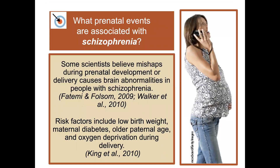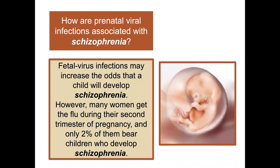Are there prenatal events associated with schizophrenia? Some scientists believe mishaps during prenatal development or delivery cause brain abnormalities in people with schizophrenia. Risk factors include low birth weight, maternal diabetes, older paternal age, and oxygen deprivation during delivery. Regarding viral infections, fetal virus infections may increase the odds that a child will develop schizophrenia. However, many women get the flu during their second trimester and only 2% of them bear children who develop schizophrenia — so it increases the risk but is not definitive by any means.